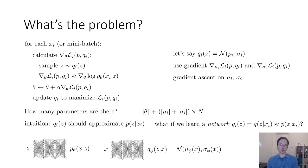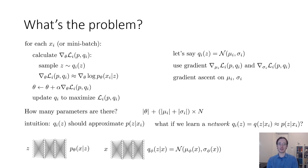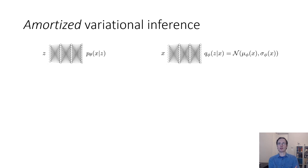The idea in amortized variational inference is to amortize the cost of inferring this approximate posterior Q_i of Z over all of the data points by using a single model that gives us the posterior for any X — and that single model could be a neural network. We still have a Gaussian posterior for every X, but instead of storing the mean and variance for every data point, we have a neural network that takes in a data point and outputs mu_phi(X) and sigma_phi(X), the parameters of the Gaussian posterior for X.